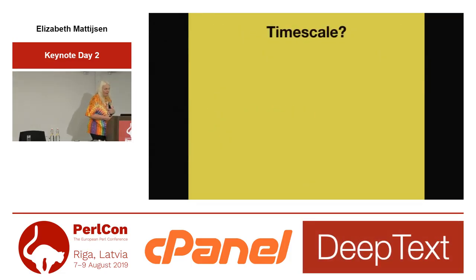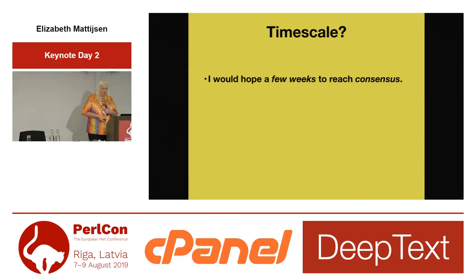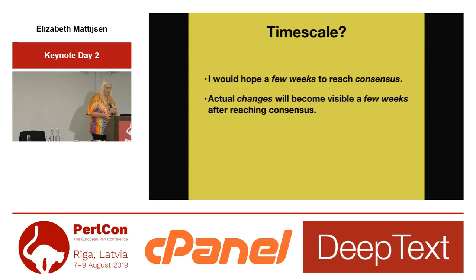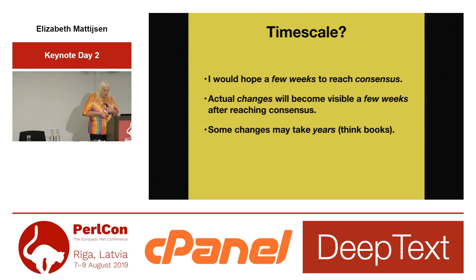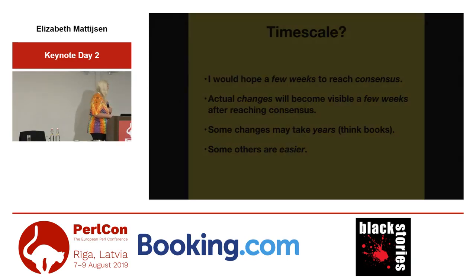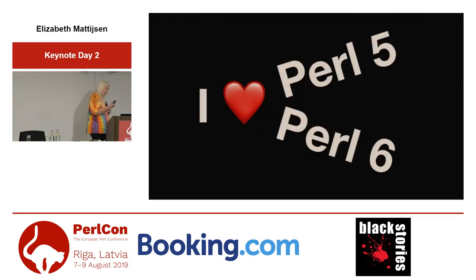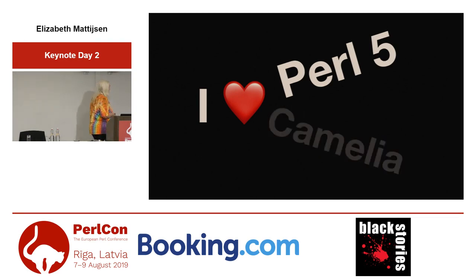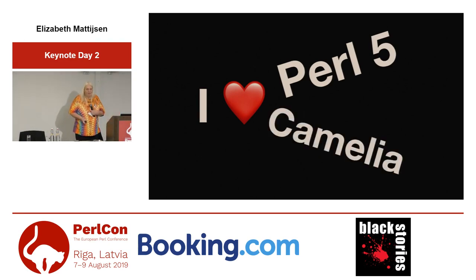So what are the timescales we're looking at? I would hope that we get a few weeks to reach consensus about this issue, and then hopefully within a few weeks after that we could start seeing the very first changes. Of course, some changes are easy and some changes may take years — think books. We need to make stickers for a lot of books basically saying 'new, improved, Camelia'. Some other changes are easier, like this thing I started last year: 'I love Perl 5, I love Perl 6.' Well, that's easy enough. It could work, I think.